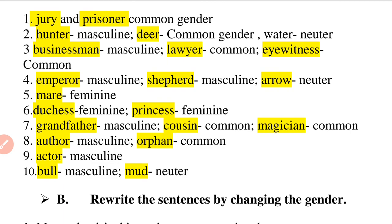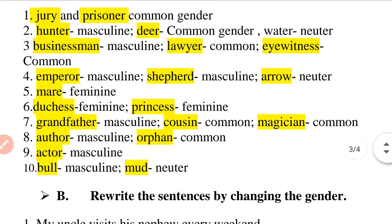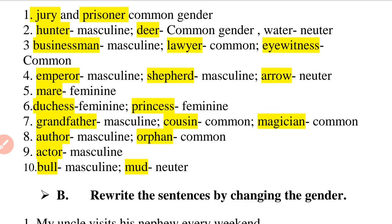Question number 4: 'The emperor told the shepherd to shoot an arrow to the ear.' Emperor is masculine gender, shepherd is also masculine gender, and arrow is neuter gender.